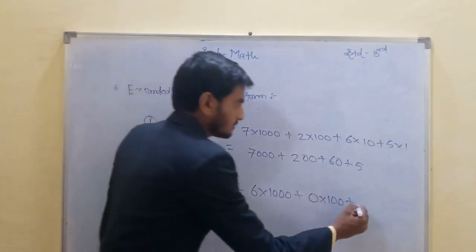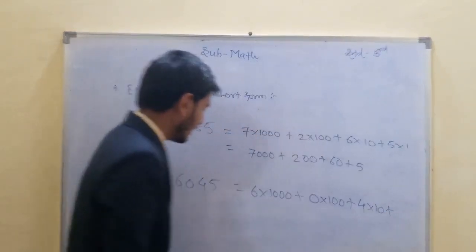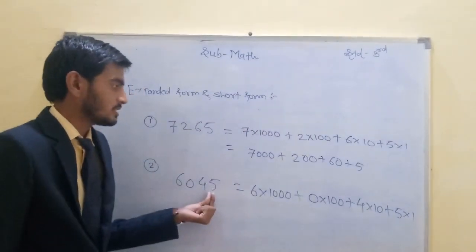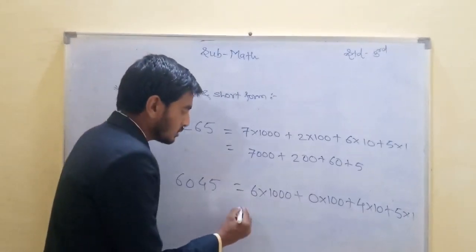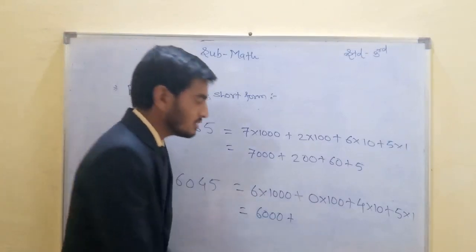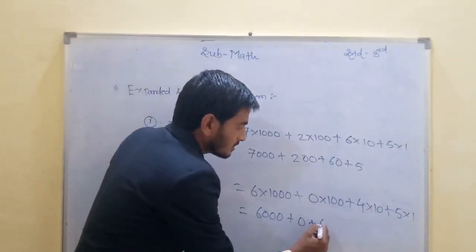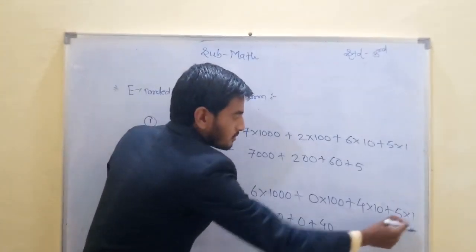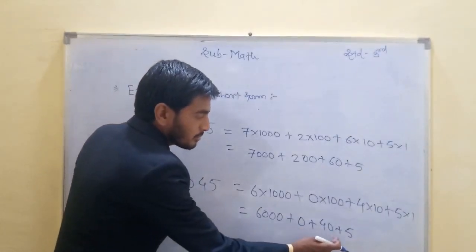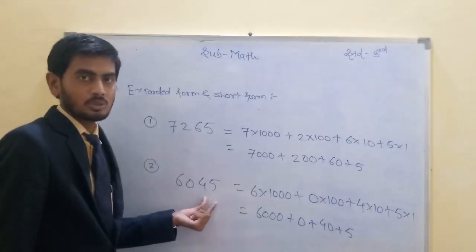Next, 4. On which place? 1's and 10's. Means 4 multiplied by 10. Plus last one, 5. 5 multiplied by 1. Means 5 is on the 1's place. Multiply all: 6 multiplied by 1000 is 6,000. Plus 0 multiplied by 100 — the product is always 0, so write 0. Plus 4 multiplied by 10 is 40. And last, 5 multiplied by 1 is 5. So 6,000 + 0 + 40 + 5 is the expanded form of 6,045. Okay, do you all understand?